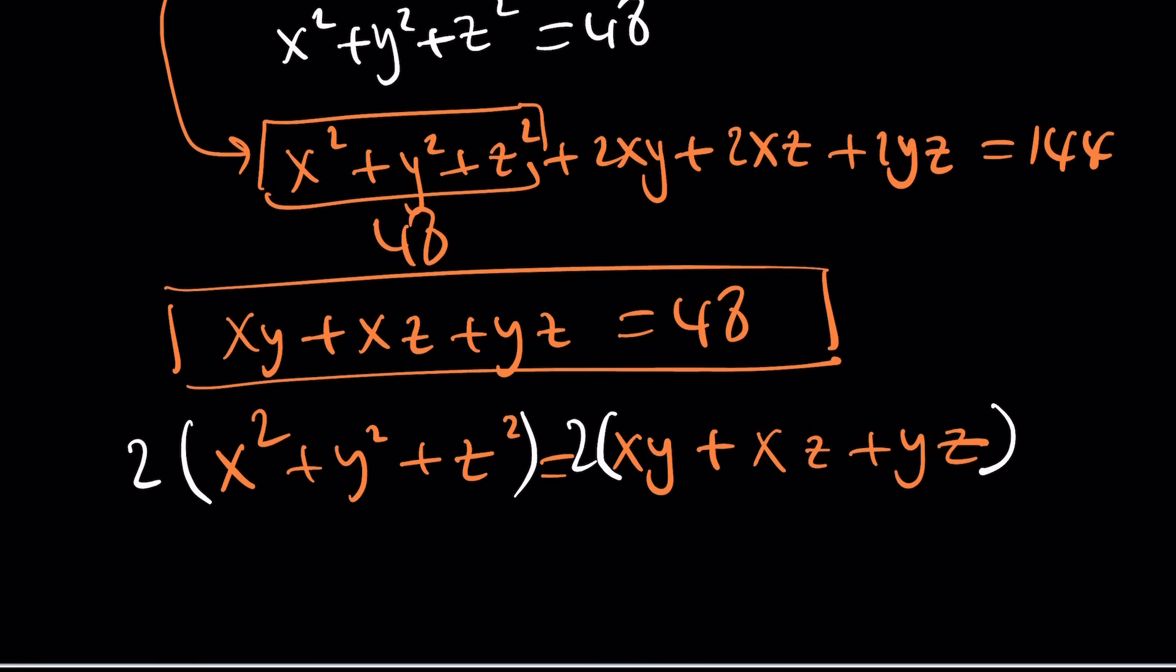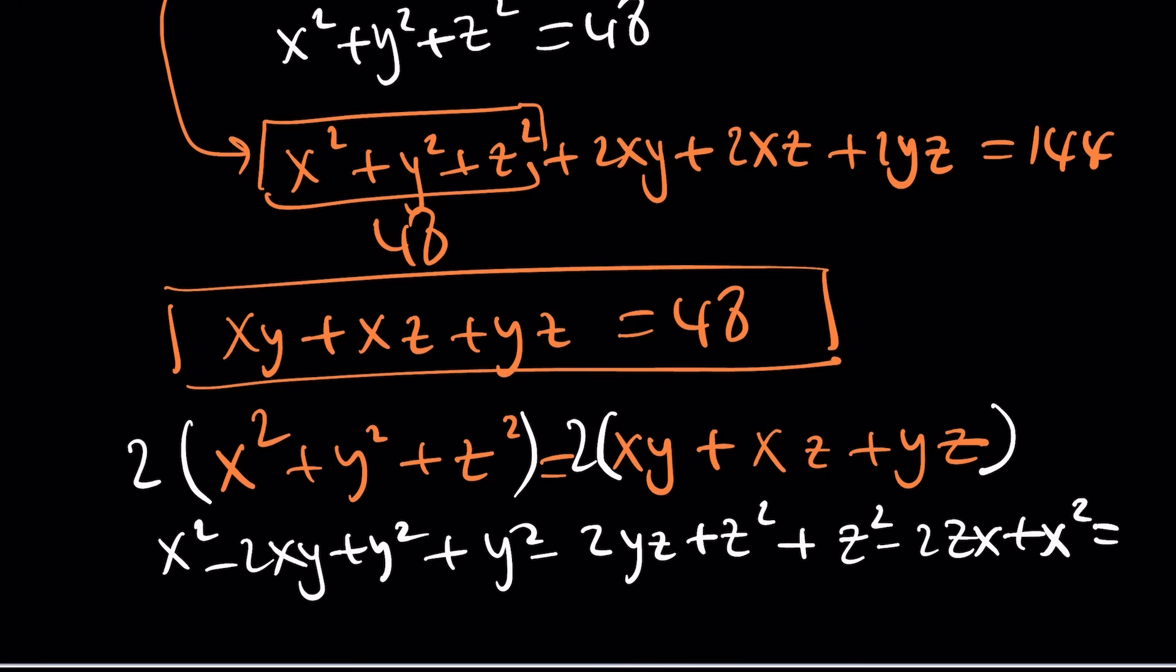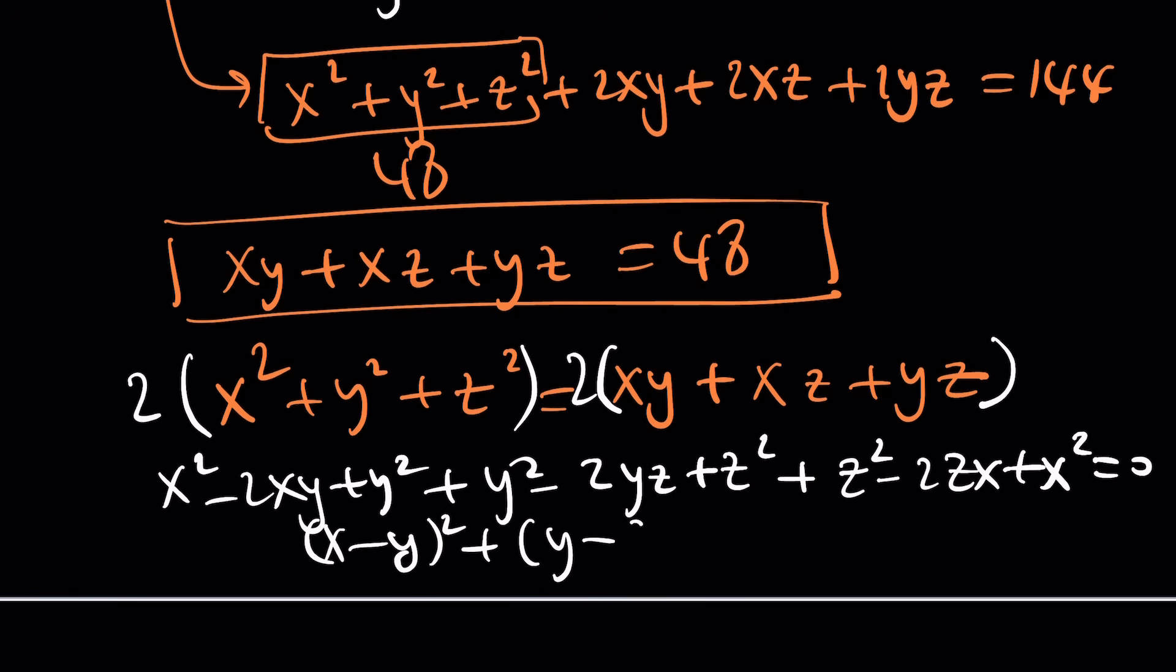Now, you can go ahead and write everything like this. This just means x minus y squared plus y minus z squared plus z minus x squared equals 0, which means they're all equal, because all of these have to be 0, because the sum of squares can only be 0 if each term is 0.